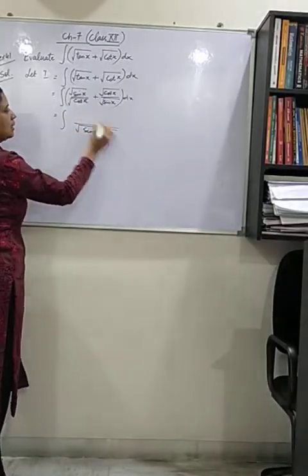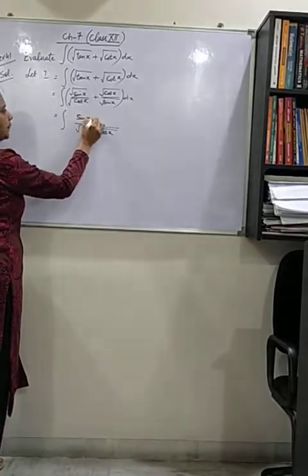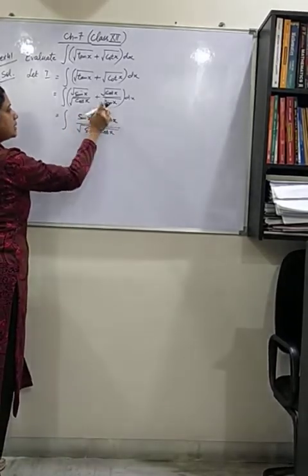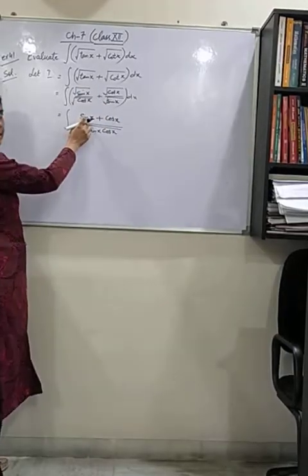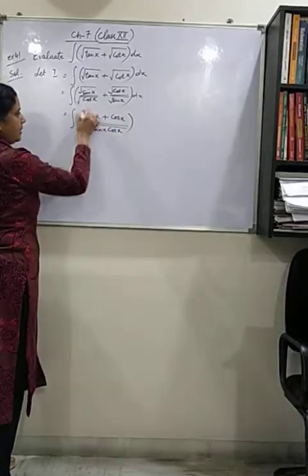It comes as root sin x cos x. In the numerator, I will get root sin into root sin, that is sin x, plus root cos into root cos, that is cos x.